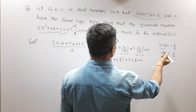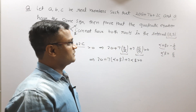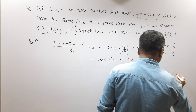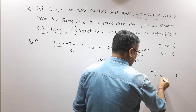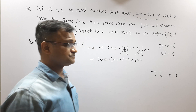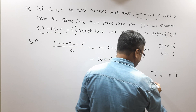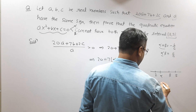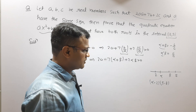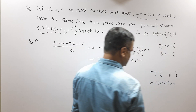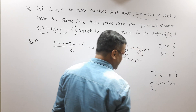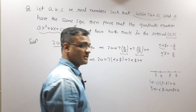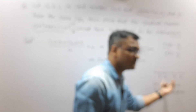What we have to show is that both roots cannot lie in the interval (2, 5). I am going to proceed by contradiction. Suppose both roots α and β lie in this interval. Then α > 2, so α − 2 is positive, and 5 > β, so 5 − β is also positive. The product of two positive numbers is again positive.